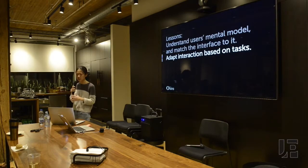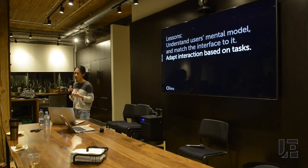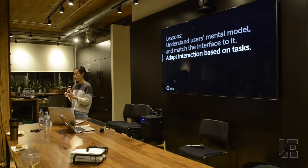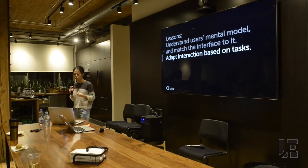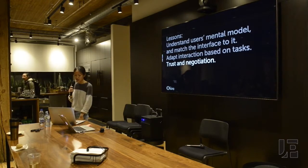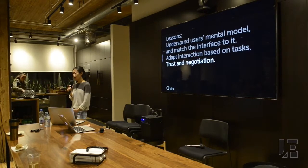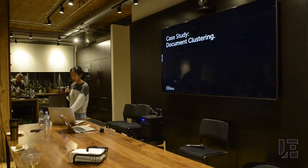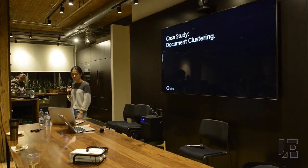The second thing is to really adapt your interaction based on the kind of user tasks. What you'll find is that certain algorithms are better at certain tasks than others. So understanding what users' goals are and what their tasks are, and adapting your interface and interaction to it, is really, really important. And in the end, establishing trust and allowing negotiation — users need to be able to negotiate with your system. I'll use a case study to illustrate those points.